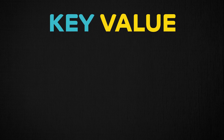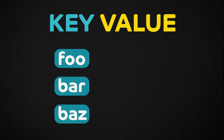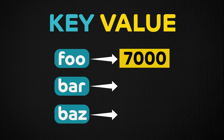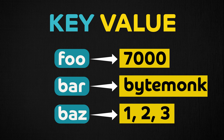A key value store is a database that consists of keys like foo, bar, and baz, which are typically strings, and the keys map to arbitrary values such as 7000, ByteMonk, or 1, 2, 3. As you can see, it is quite similar to a dictionary or a map data structure.